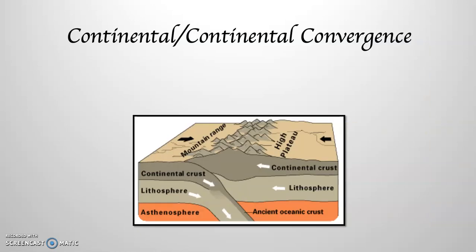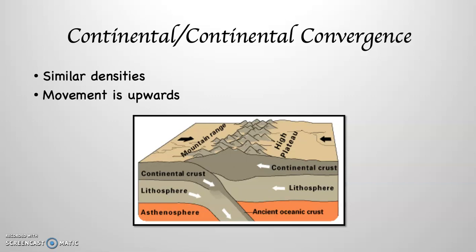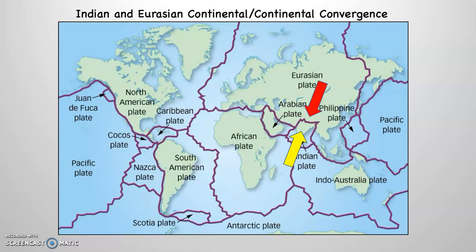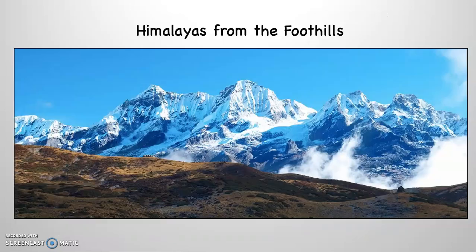Continental-continental convergence results in the following. Because two continents are similar densities, rather than subduction, what generally happens is rising of land, so the movement is overwhelmingly upwards. The most obvious place this happens is where the Indian Plate runs into the Eurasian Plate and creates the highest mountain range on Earth, the Himalayas.